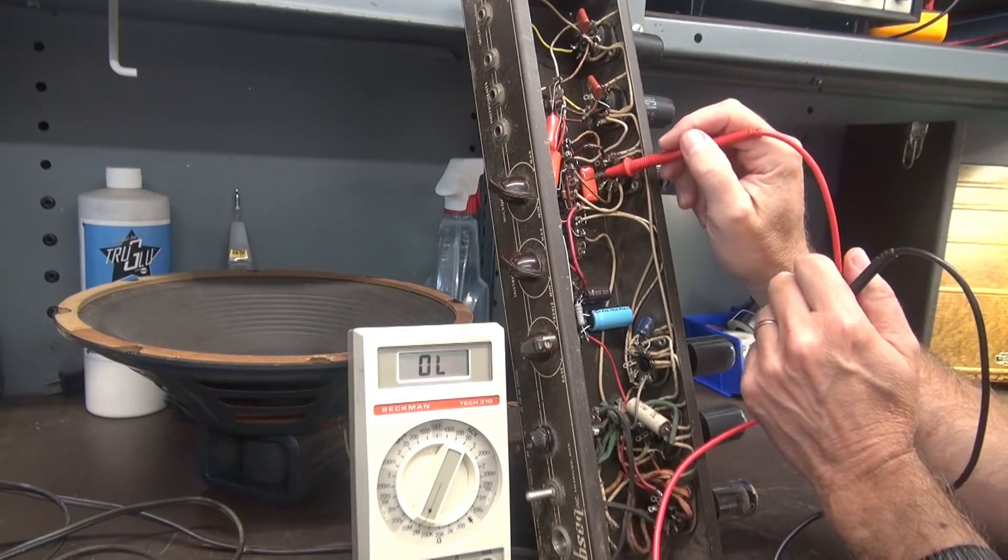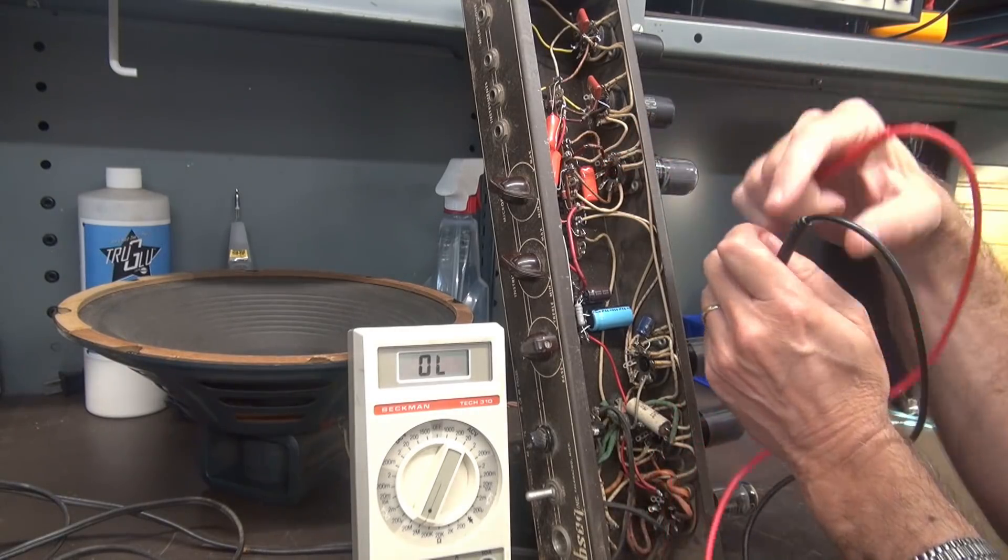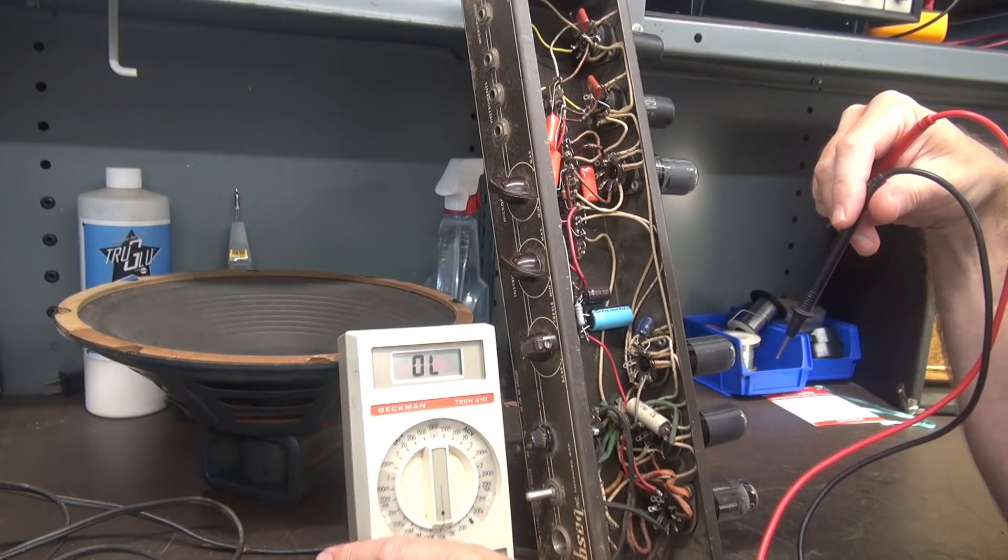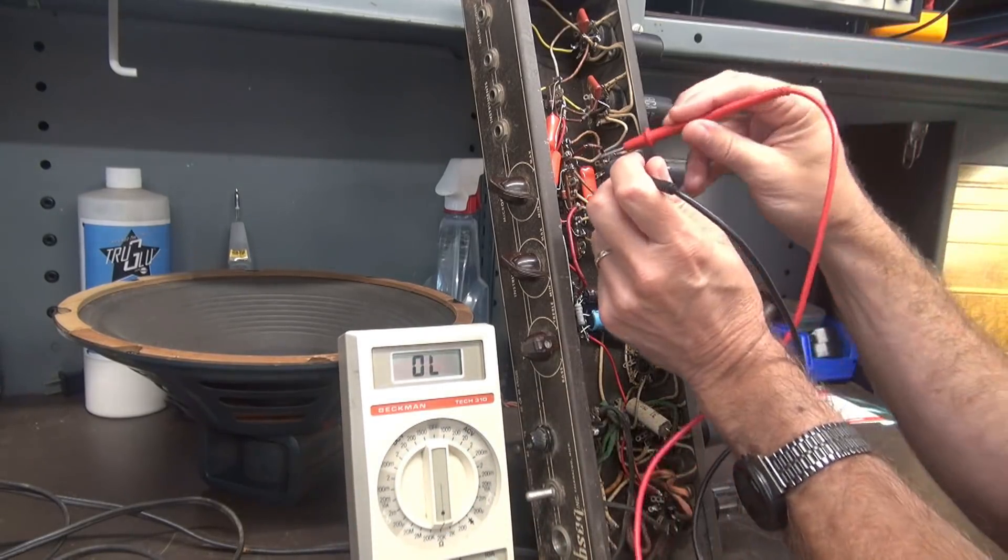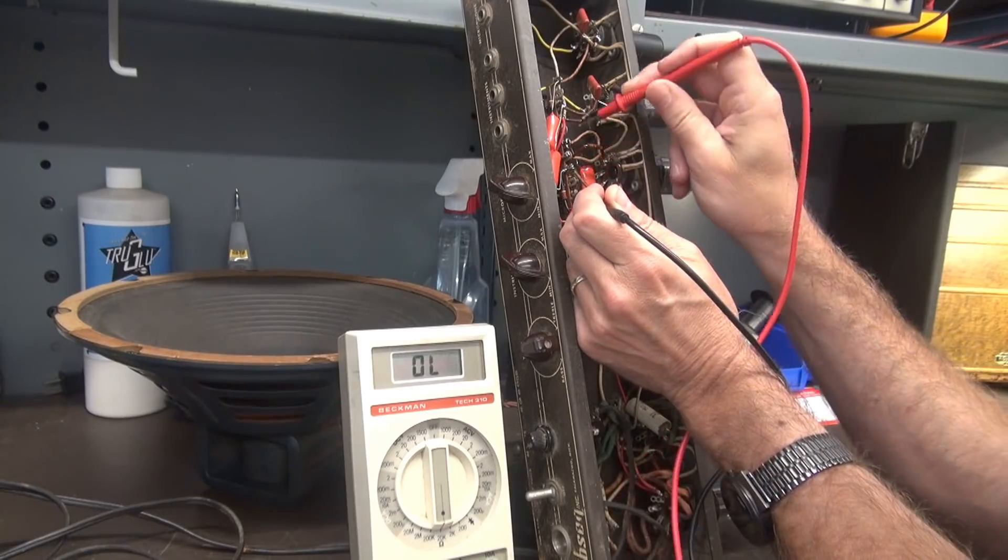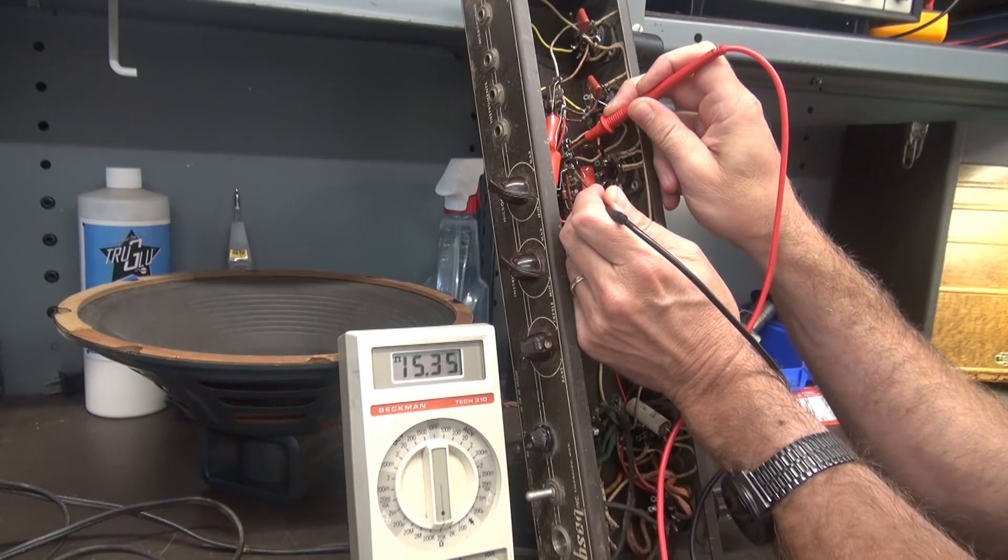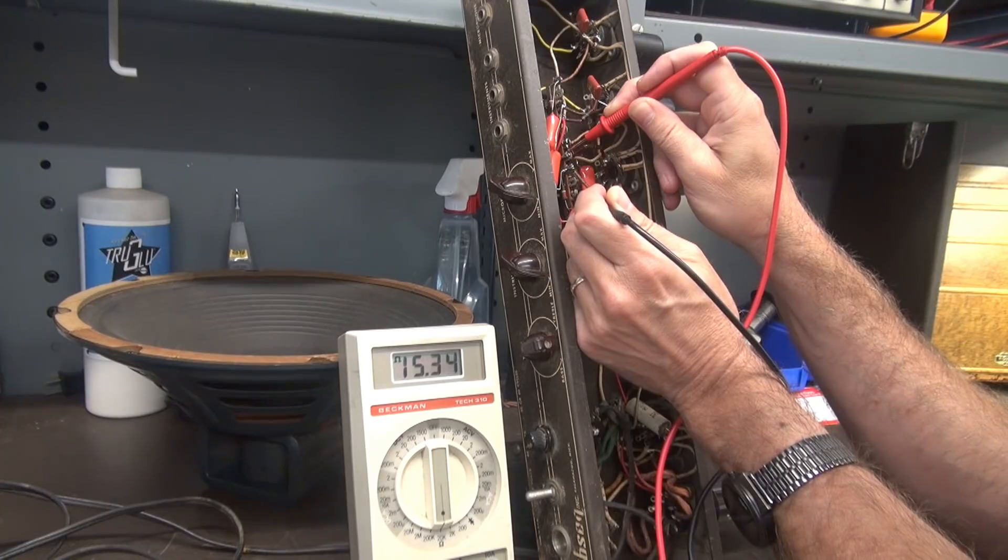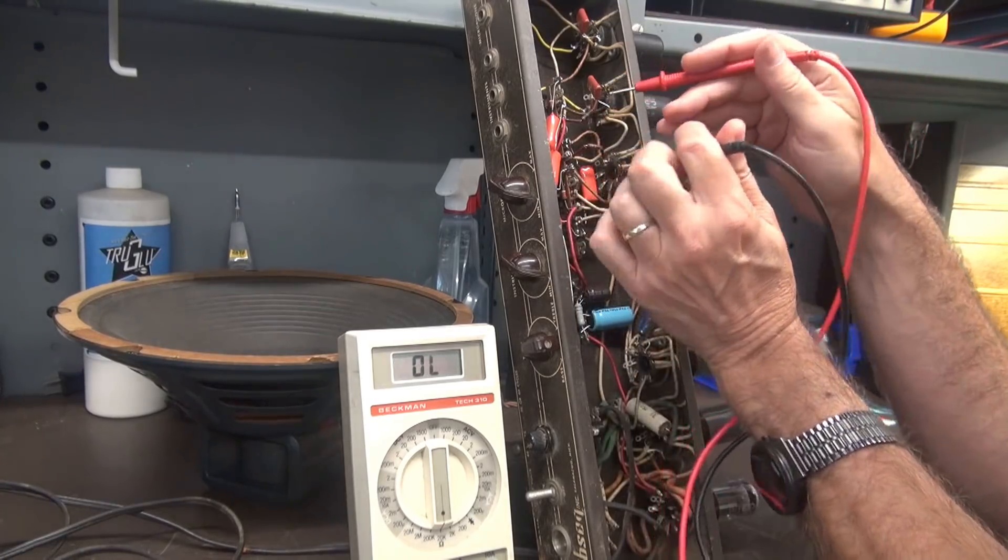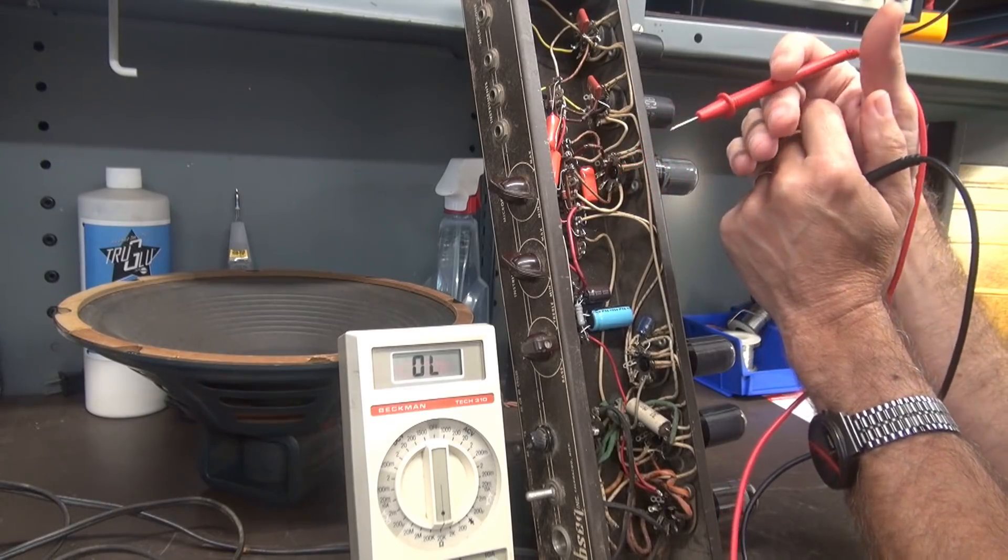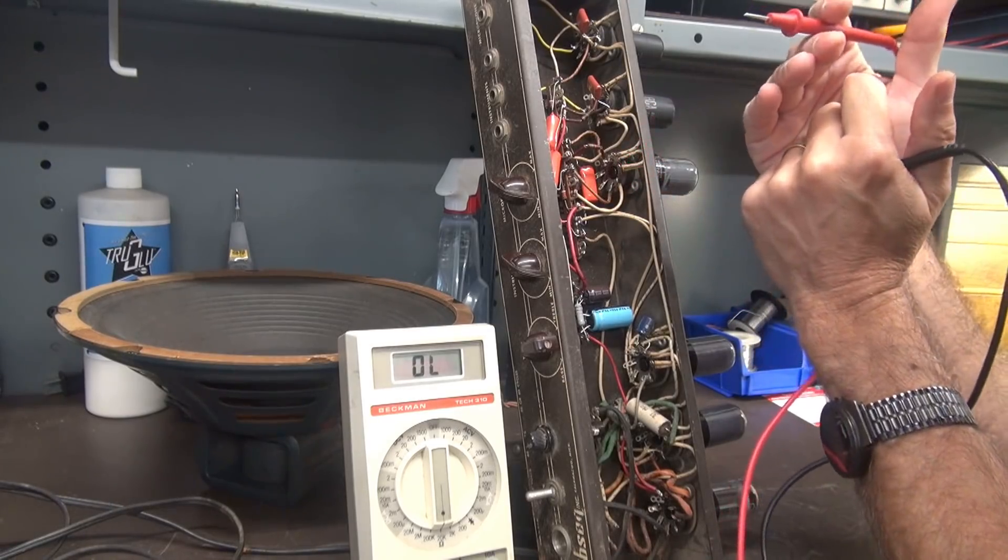All right, now there's another resistor right here. It's a 4.7k so I'm going to put my scale down to the 20k scale. Let's see what he looks like. From here to here. Ooh. That guy is over 15k and it should be 4.7k. So I think you get my point. All the resistors are out of tolerance. So what's the best thing to do? Change them all.